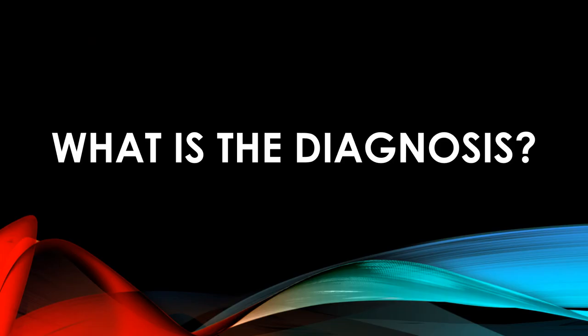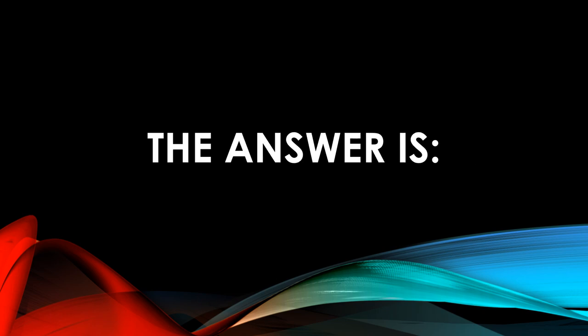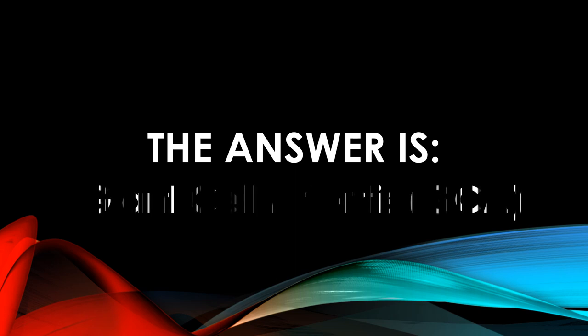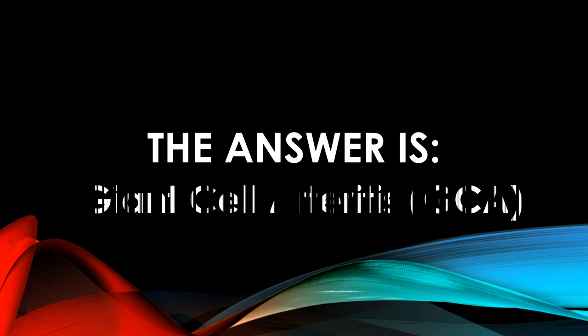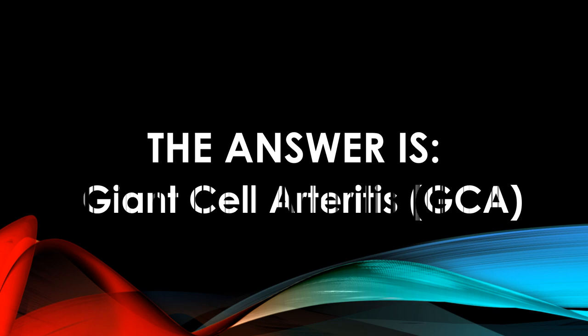So what is the diagnosis? This case today is very simple for an expert rheumatologist, but for juniors you can stop here and search for the answer. The answer is: this case is giant cell arteritis — GCA.